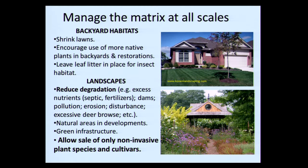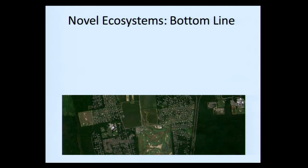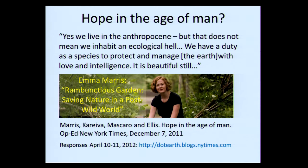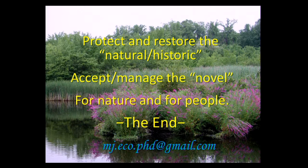The bottom line: novel and hybrid ecosystems do have value and we need them because an awful lot of land is developed and more is being developed. But we have to be aware of their possible limitations and deficiencies — food webs in particular — and do the best we can to maintain biodiversity across the whole suite of lands from purely natural through novel. As Emma Maris says, even though the world is anthropogenic, it isn't hell. We have a duty as a species to protect and manage the earth with love and intelligence. Protect and restore the natural and historic while we accept and manage the novel — for nature and for people.